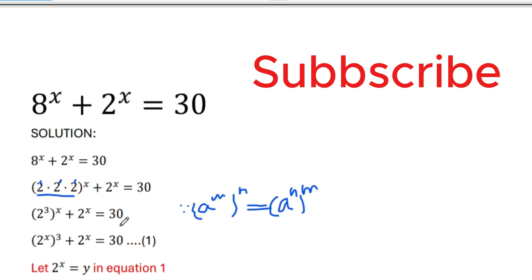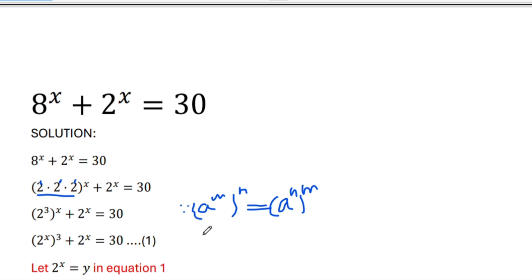Here we use the algebraic identity: if a to the power m, whole to the power n, that can also be equal to a to the power n, whole to the power m — meaning the two powers can be interchanged. So this becomes 2 to the power x, whole to the power 3, plus 2 to the power x is equal to 30.